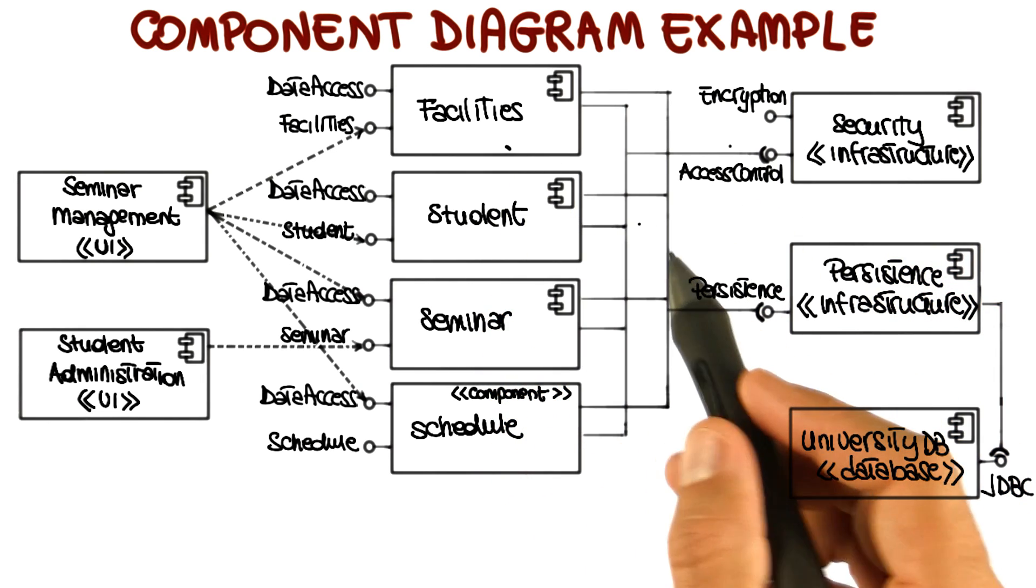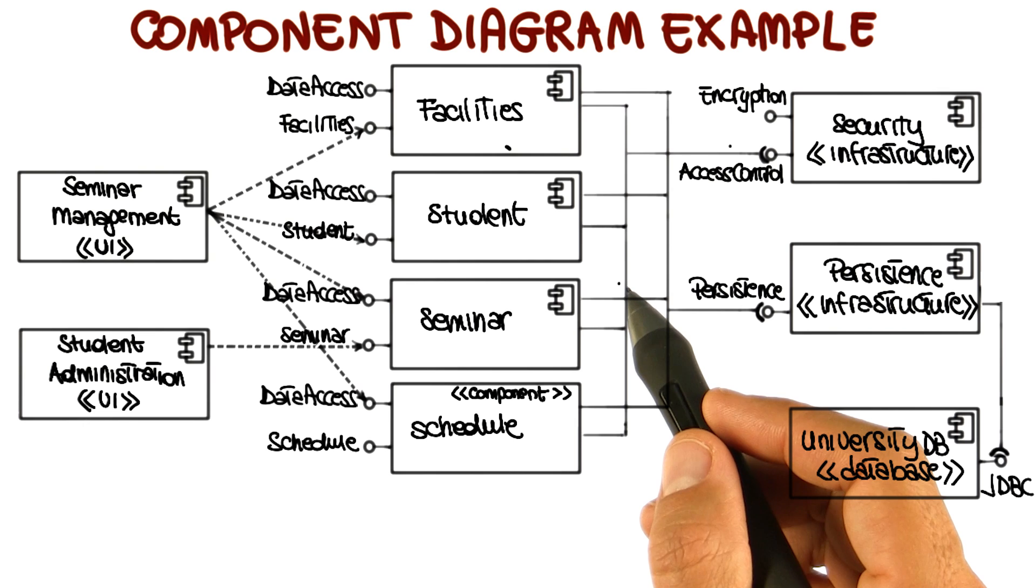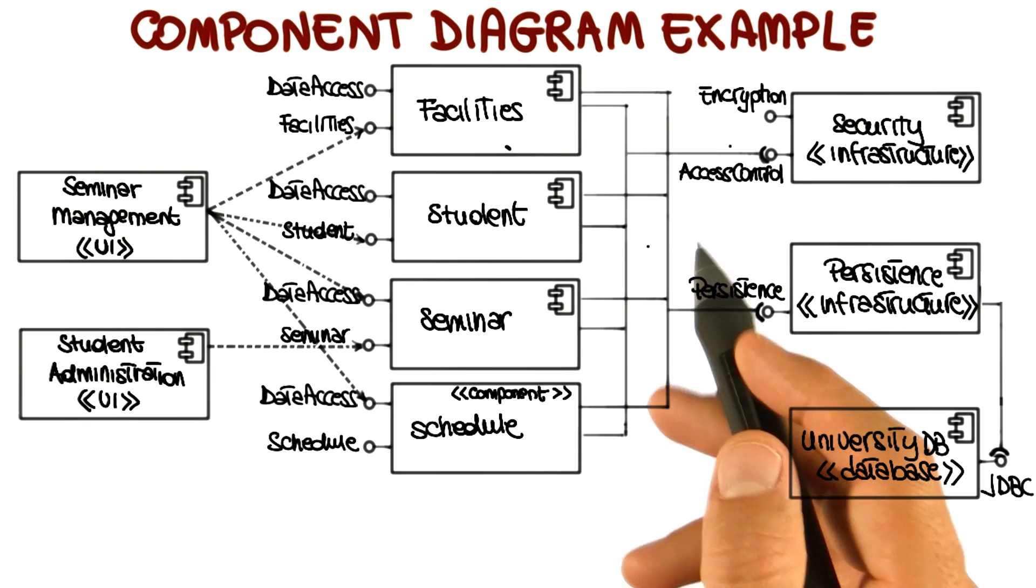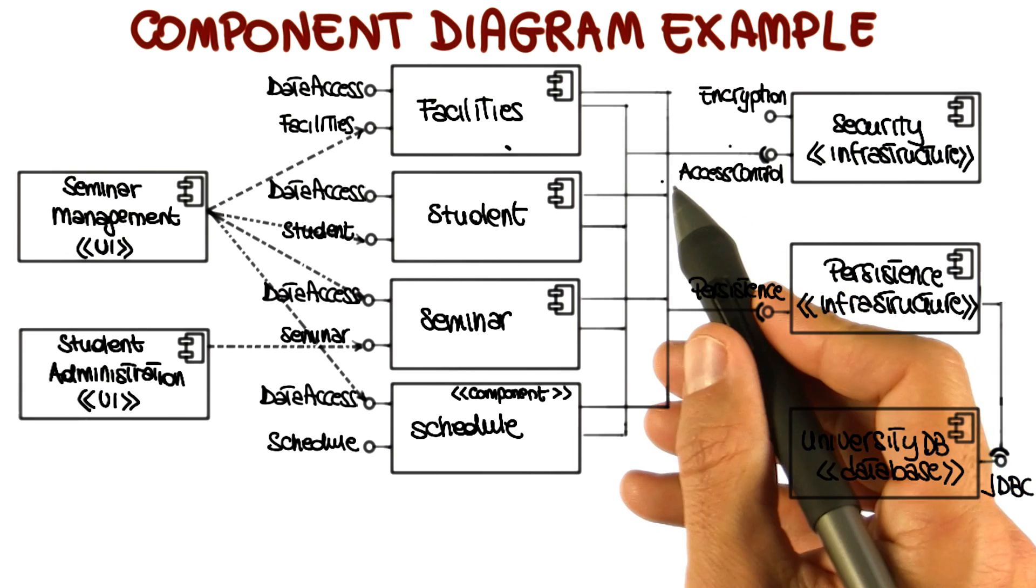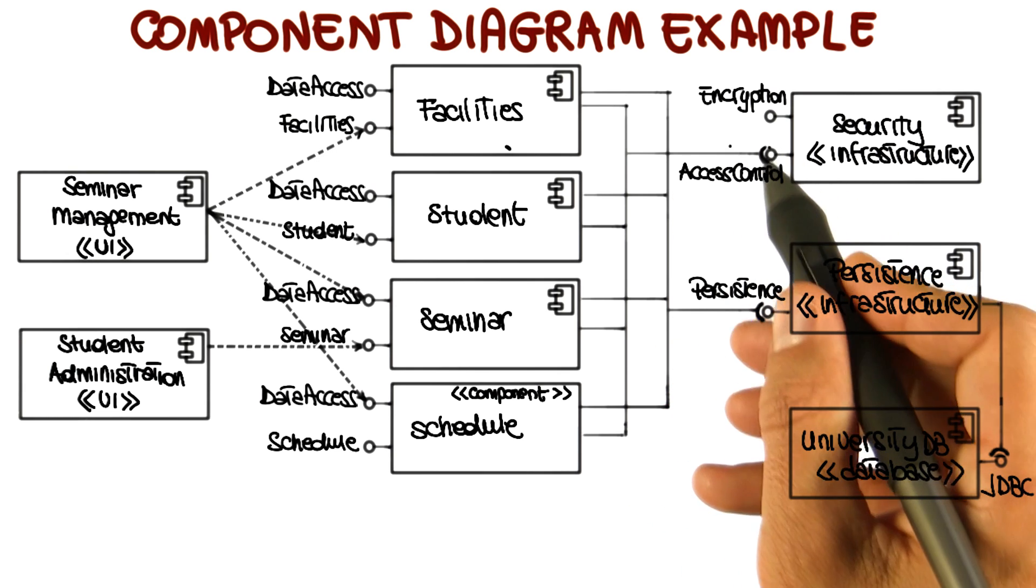So in a sense, this socket and lollipop indicate interfaces between a provider of some functionality and the client of that functionality. And you can look at those as basically APIs, so sets of methods that provide a given functionality.